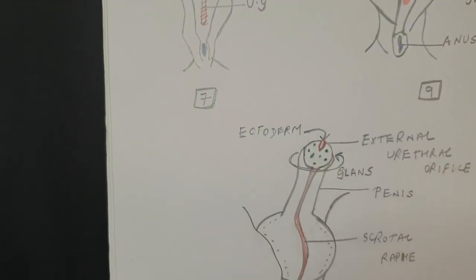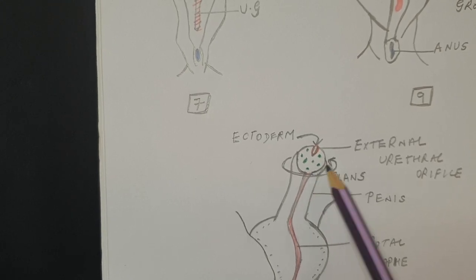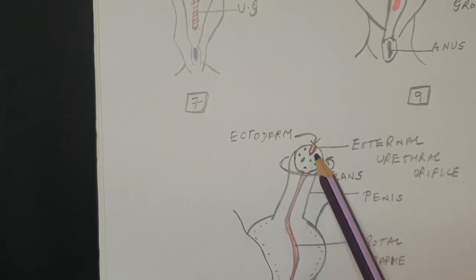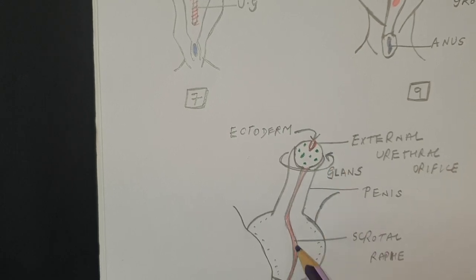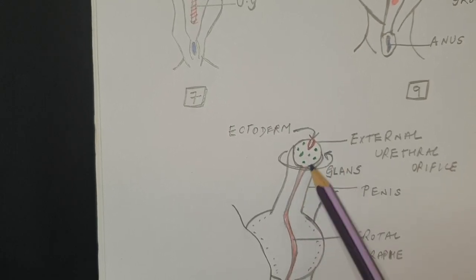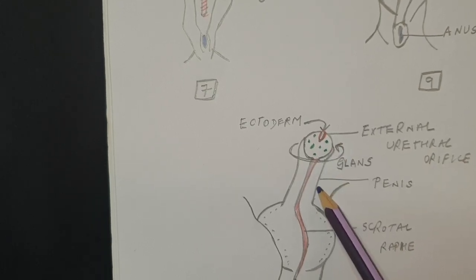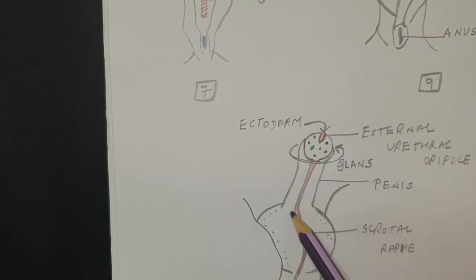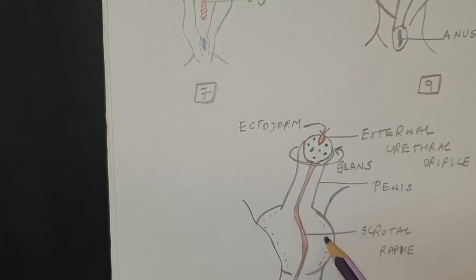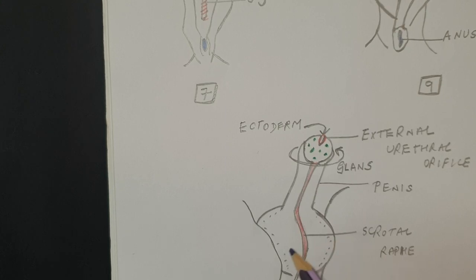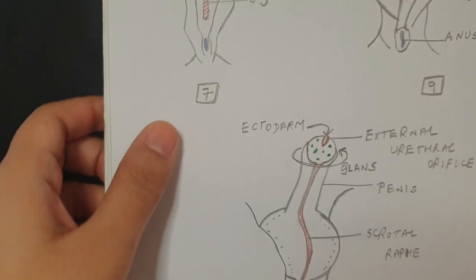Finally, the development of the glans has taken place and the external urethral orifice has opened. The formation of the prepuce has occurred. The urethral tract has closed all along its length except for the opening at the tip. The penile body with the corpus cavernosum has formed, and the spongiosum is surrounding the urethral part. On either side from the labioscrotal swellings the scrotum has formed, and the anus has separated itself.